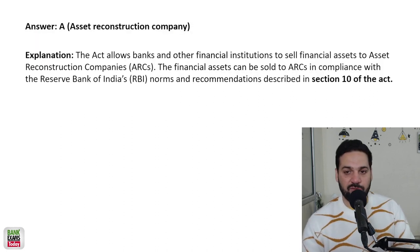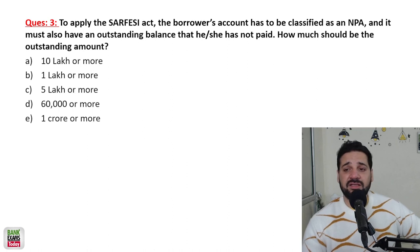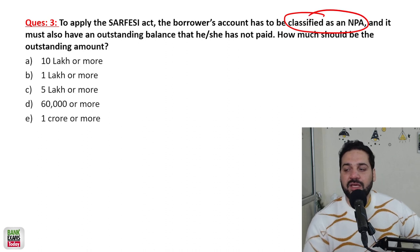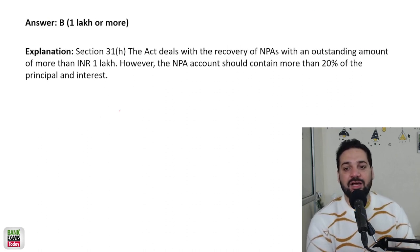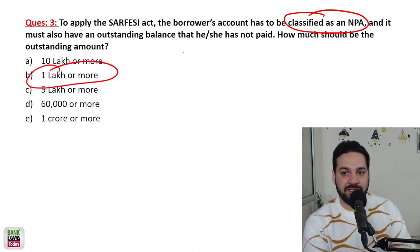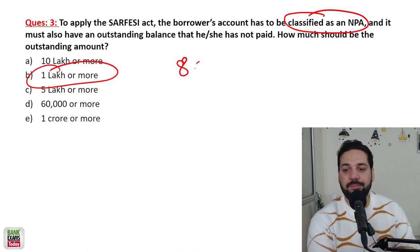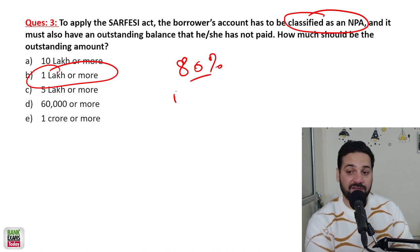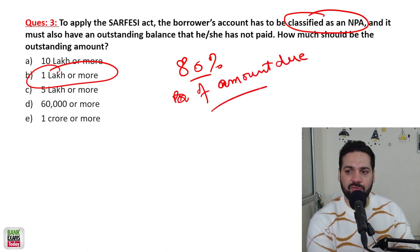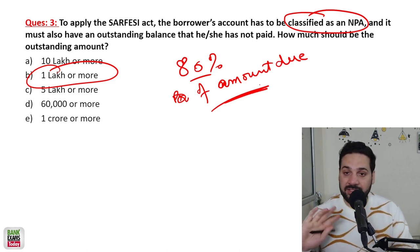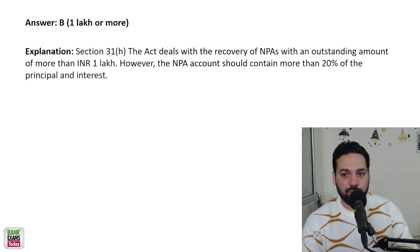To apply the SARFAESI Act, the borrower's account has to be classified as NPA, and it must also have an outstanding balance of at least 1 lakh rupees. Additionally, if the borrower has already paid 80% of the principal and interest amount due, then the SARFAESI Act cannot be applicable.